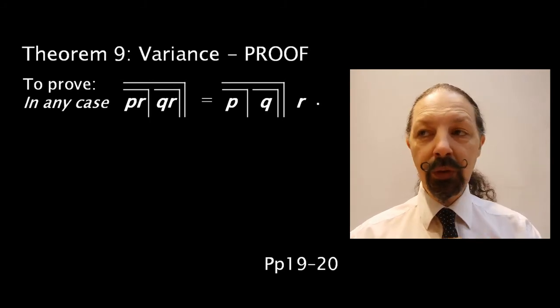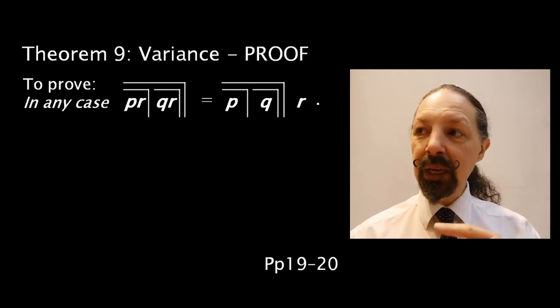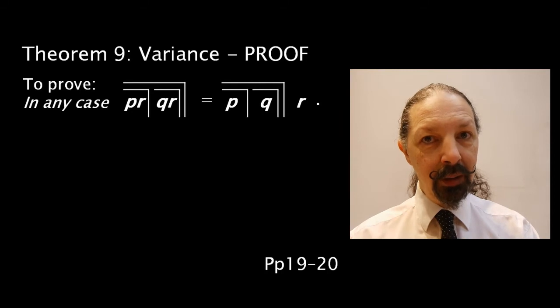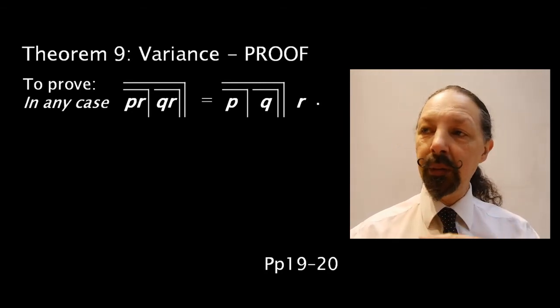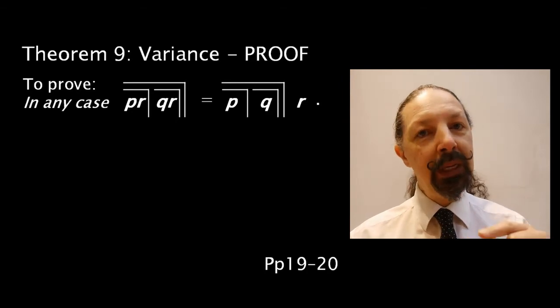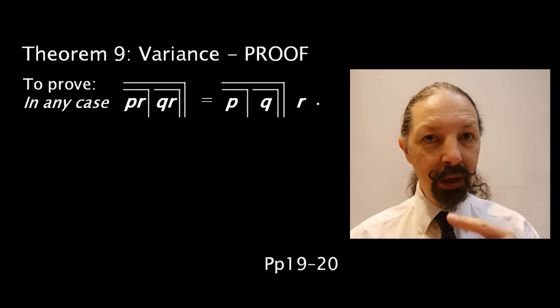p, r, mark over two, q, r, mark over two, mark over two, equals p, mark, q, mark, mark over two, r. And it can go the other way. p, mark, q, mark, mark over two, r, equals p, r, mark over two, q, r, mark over two, mark over two.